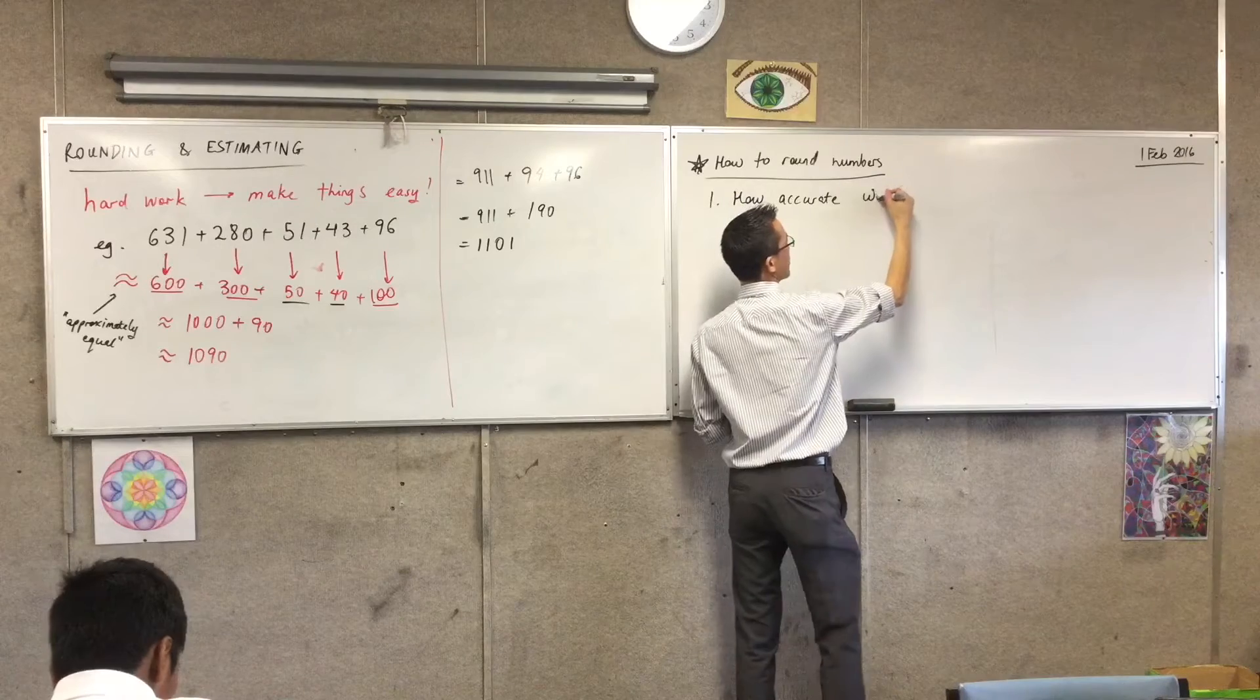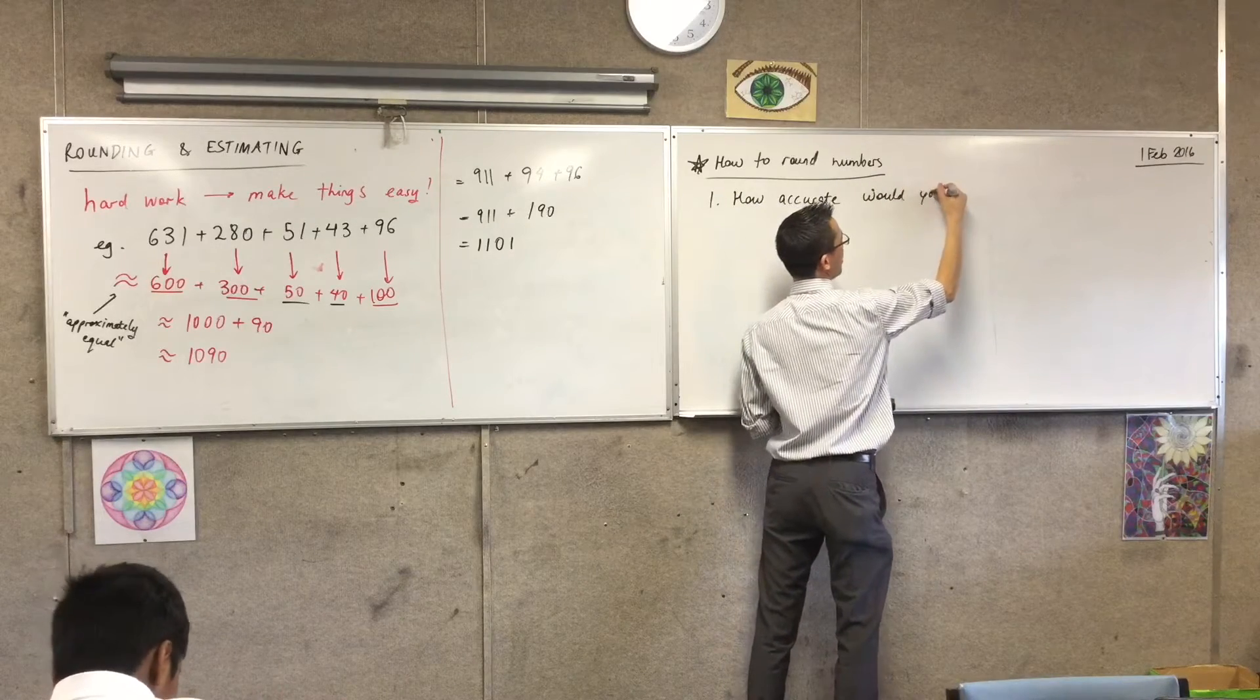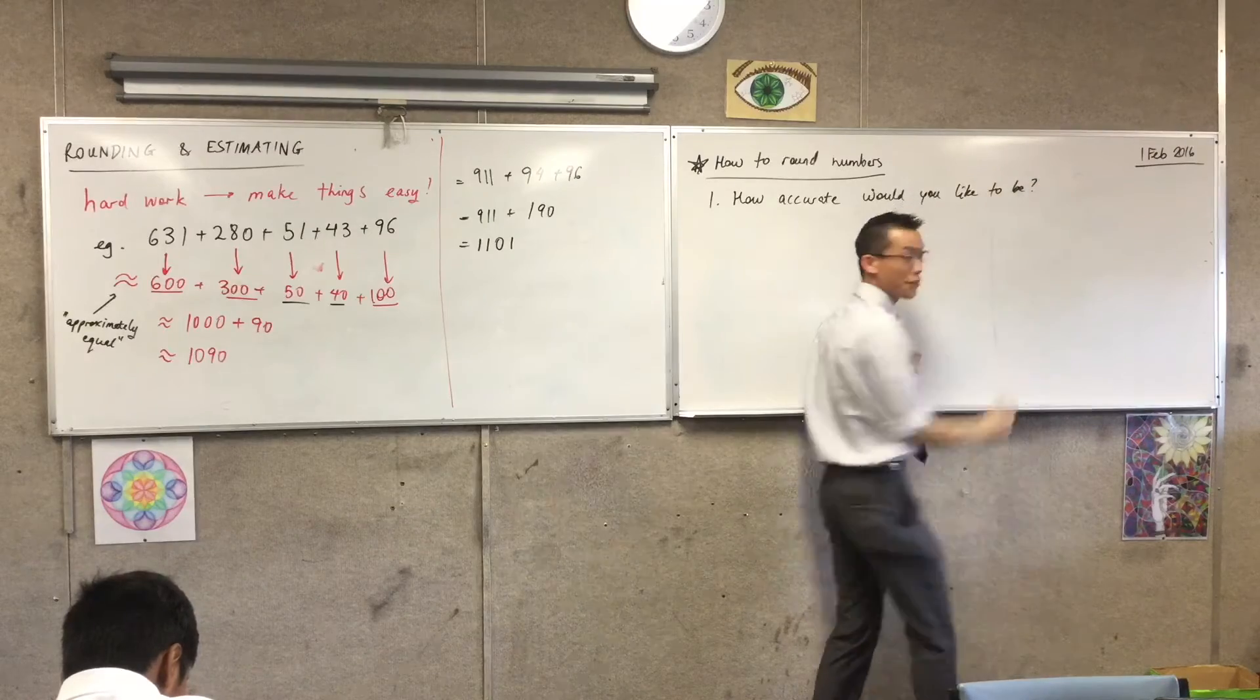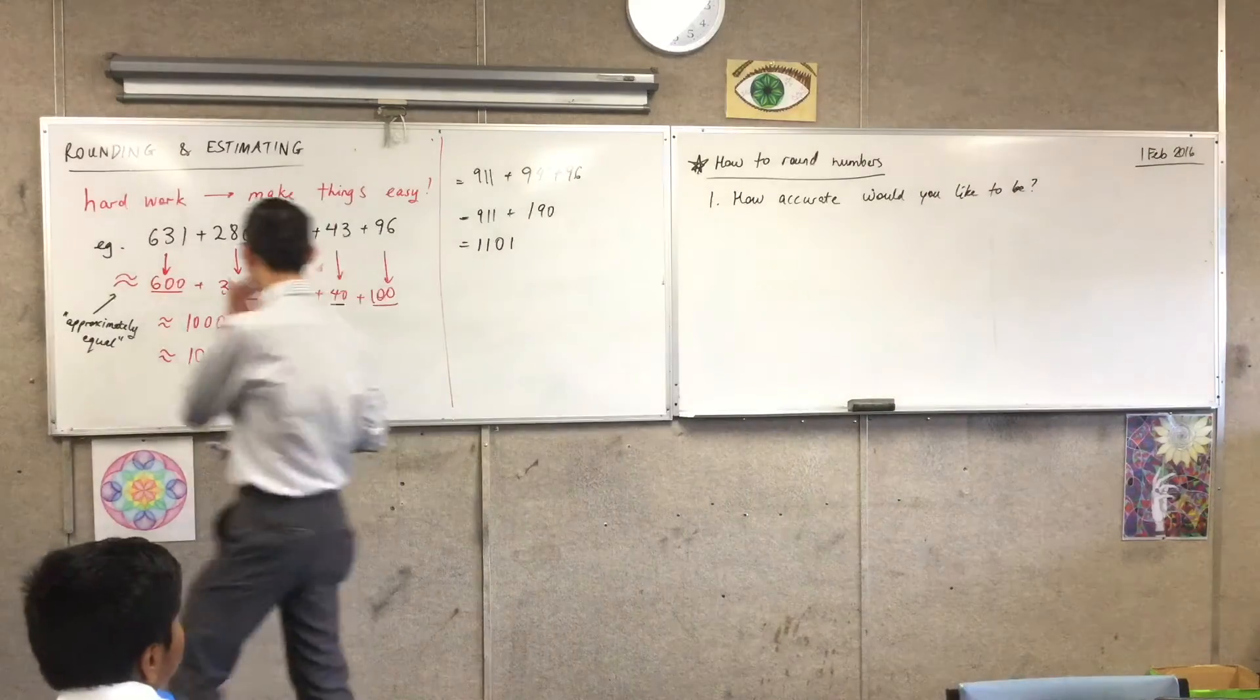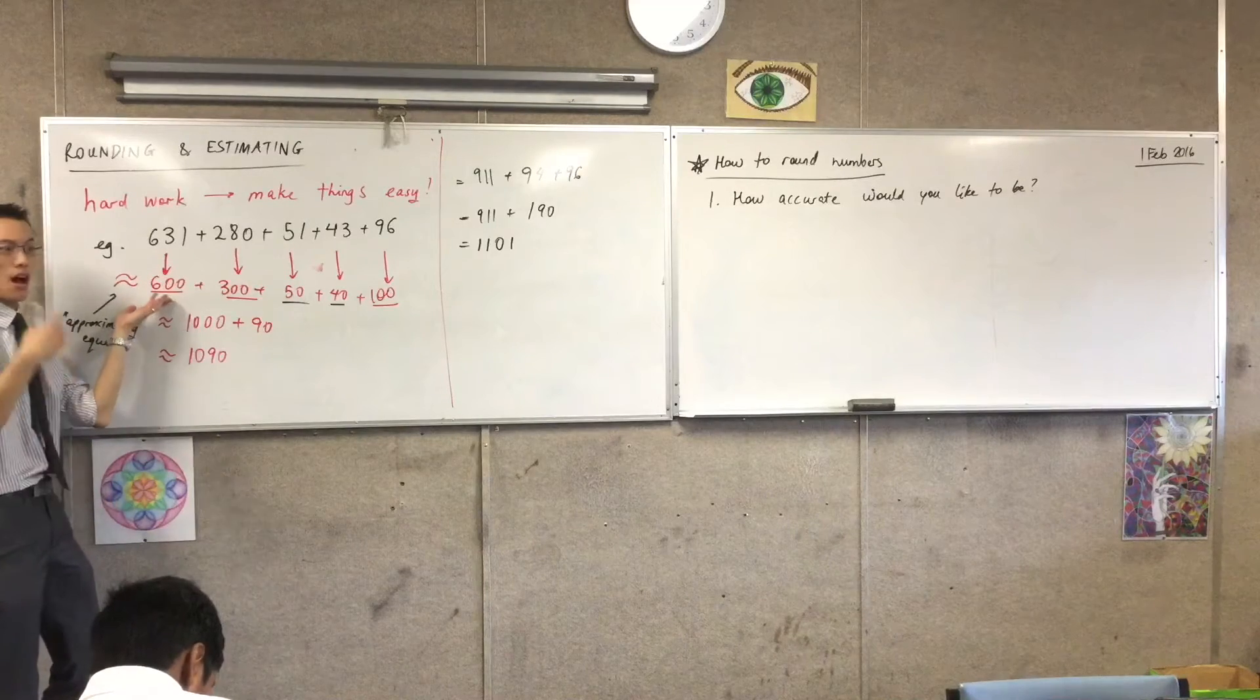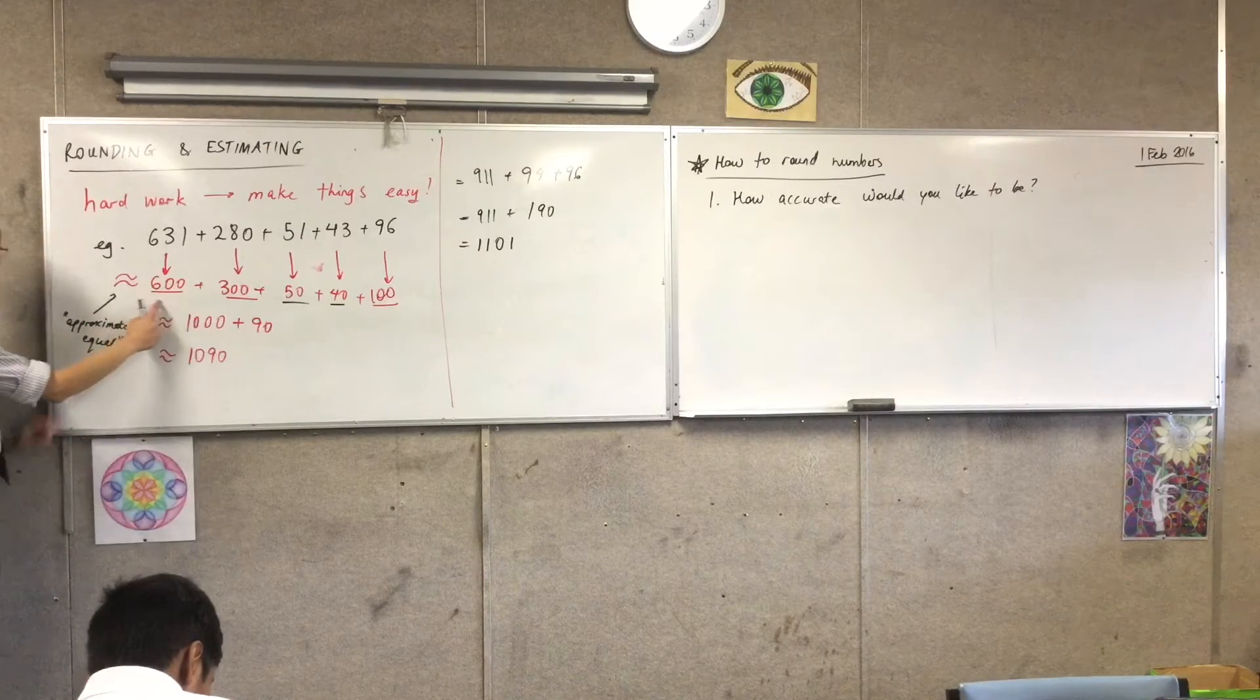You might have noticed, as we were going through our list of five numbers, right? We took a number like 631, and we rounded to the nearest hundred. Do you see that? 600, that's the closest hundred.